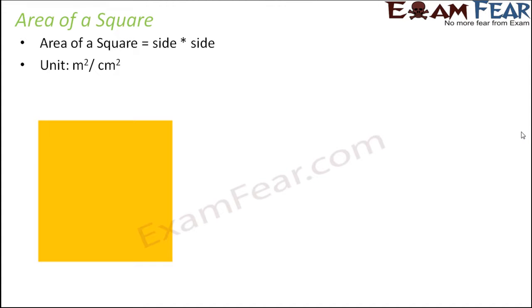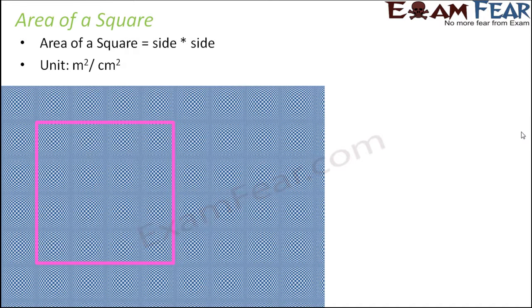So on similar lines, we can also find out the area of a square. So area of a square is side into side. When you look at the square, again, you put it over a squared paper. So how many squares are there inside it? So when you look at its side, here, this side also there are four squares and this side also there are four squares. And that's quite obvious. That's because all the sides of the square are equal. So on each side, you will have same number of squares.